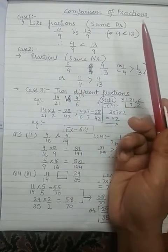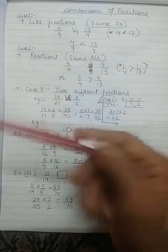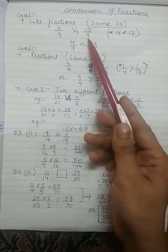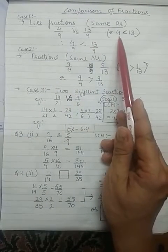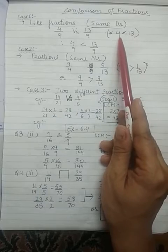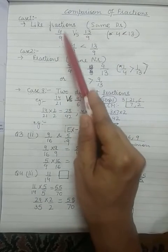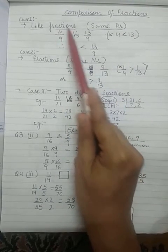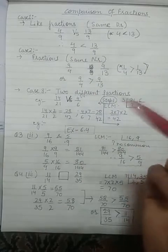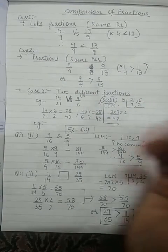Because the denominator is the same, the only digits we are able to compare are 13 and 4. Which is going to be smaller — 4 or 13? 4 is smaller, so this corresponding fraction will become smaller. Comparing like fractions is very easy.